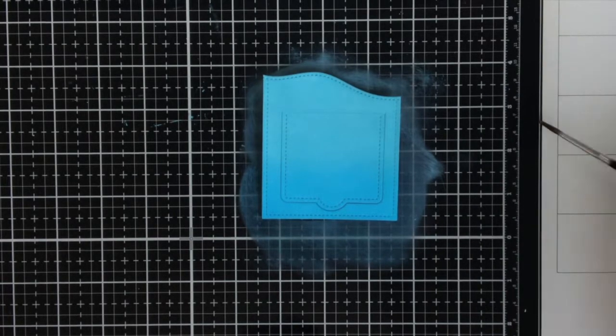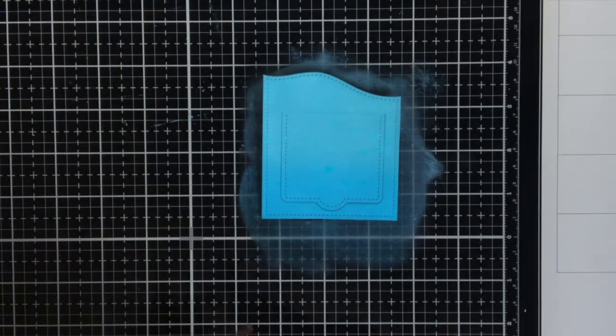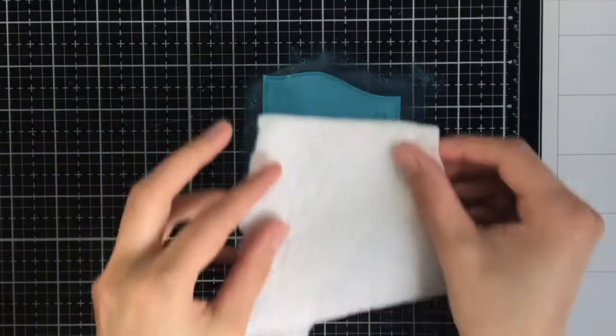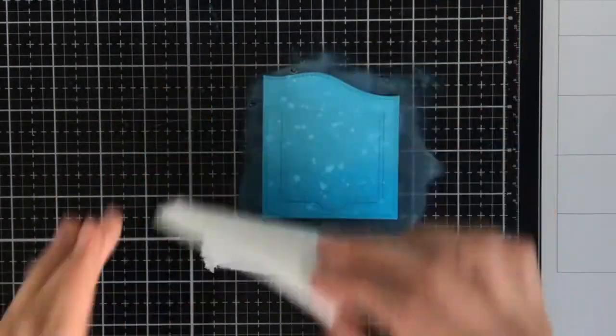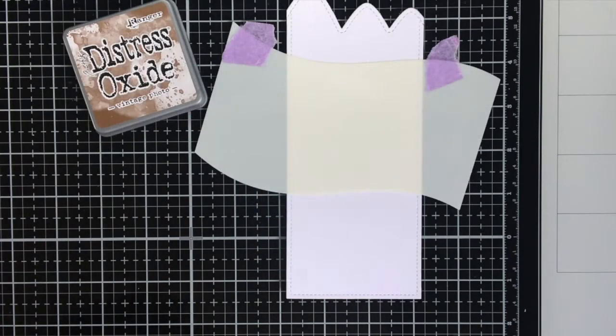To make it look more like water I'm going to add splatters to the panel. So I added water to my glass media mat and I am picking it up with a brush. Then I tap against the brush to create the splatters. I let that sit for a while and then I pick up the excess water with a paper towel.